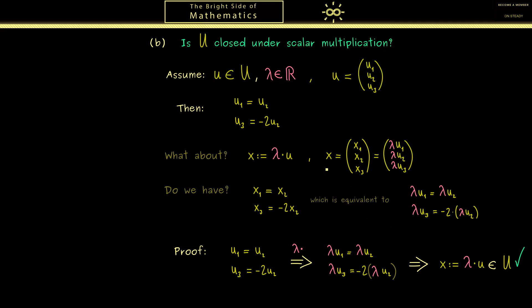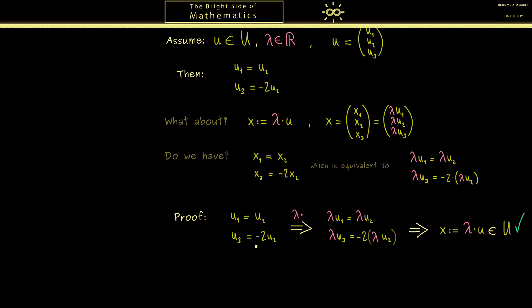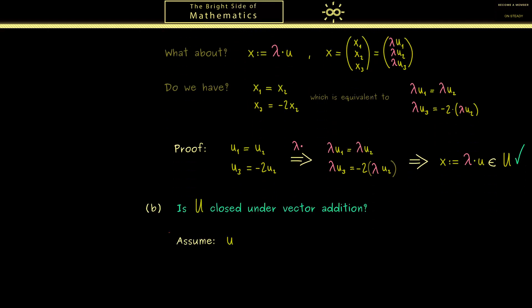And then only the last and third question remains: is U also closed under the vector addition? Of course this should work very similarly to the proof before. However now the assumption will be different because our input now consists of 2 vectors from the set U. So let's call them u and v with components as before, so u₁, u₂, u₃ and v₁, v₂, v₃. Now you already know because the 2 vectors lie in the set U we have the 2 equations for the components.